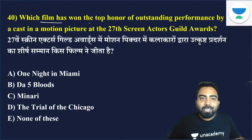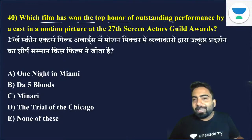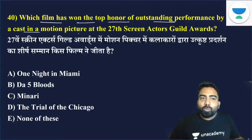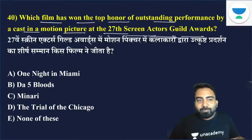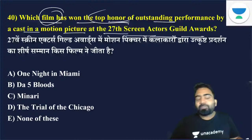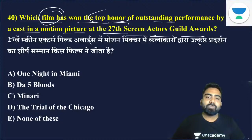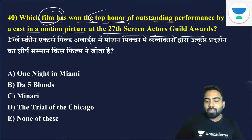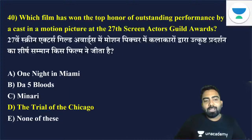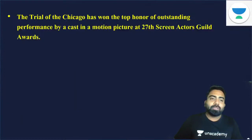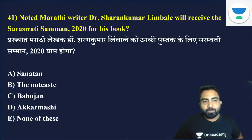Which film won the top honour of Outstanding Performance by a Cast in a Motion Picture at the 27th Screen Actors Guild Award? The answer is The Trial of the Chicago 7 — option D.